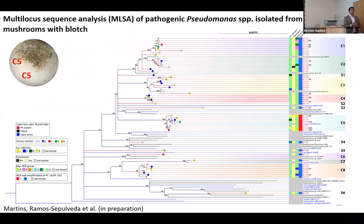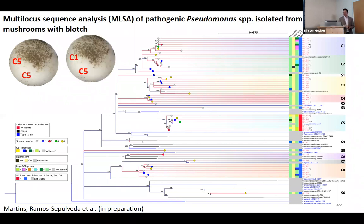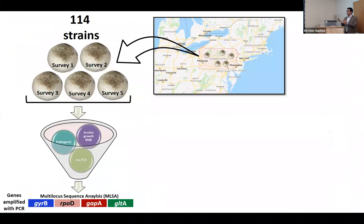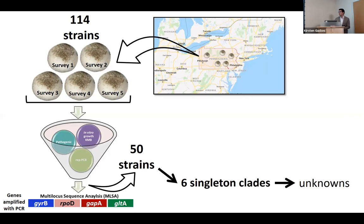Furthermore, in a single mushroom we found more than one strain of the same species — for example, different strains of Pseudomonas tolasei from clade 5. Sometimes we saw different species infecting the same mushroom, and even three species simultaneously. In summary, we isolated bacteria from five mushroom farms, narrowed down the isolates by pathogenicity tests and rep PCR, and conducted a multi-locus sequence analysis using four housekeeping genes, ending up with 50 strains grouped in six singleton clades. All of them did not group with any type strain — they are unknown and potentially could be new species.